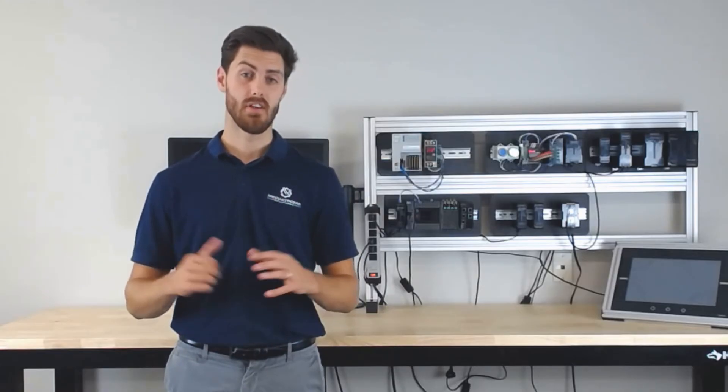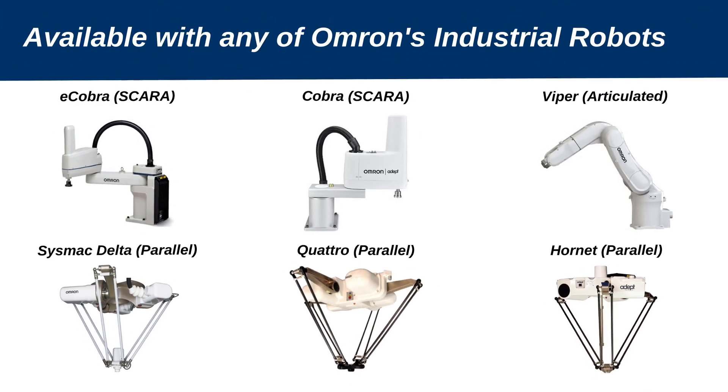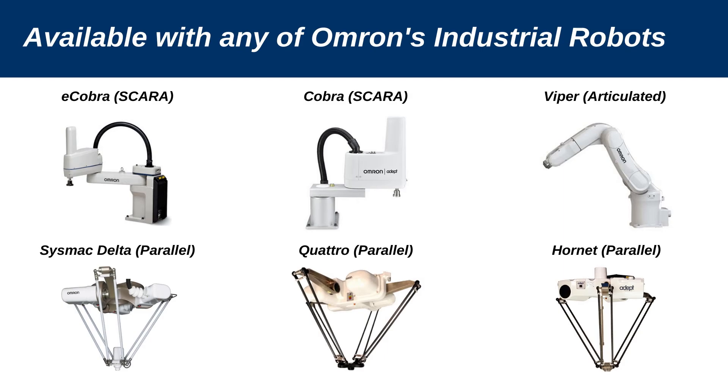All of these features are available on any of Omron's industrial robots, including their Cobras, their Vipers, and their Hornets.